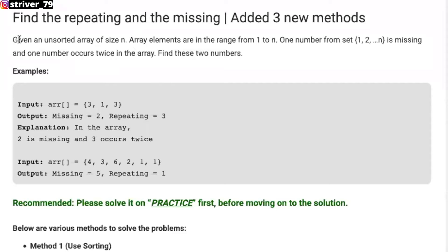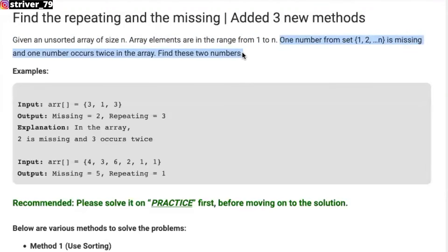The problem statement states that you'll be given an unordered array of size n. The array elements will always be in the range 1 to n, and among the array numbers, one number will be missing while the other number will be repeating twice. Your task is to find both the numbers. In the first example, the array length is 3, so numbers 1, 2, and 3 should be present, but 2 is missing and 3 is repeating twice. In the second example — 4, 3, 6, 2, 1, 1 — the missing number is 5 and the repeating number is 1.